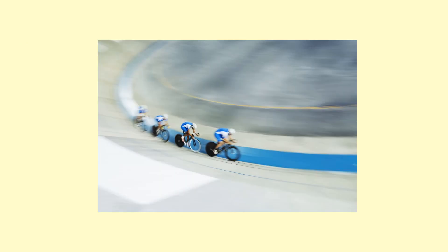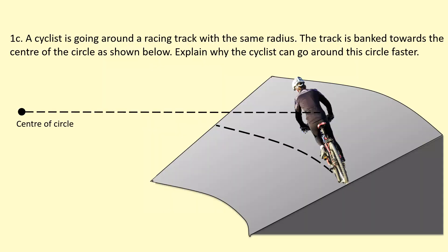To avoid skidding and to go around corners faster or even with a smaller radius, we bank the surface. This can be true for bikes, but also for cars and roller coasters. The same cyclist is going around a racing track with the same radius, the track is banked toward the center of the circle. Explain why the cyclist can now go around this circle faster. Let's start with a free body diagram.